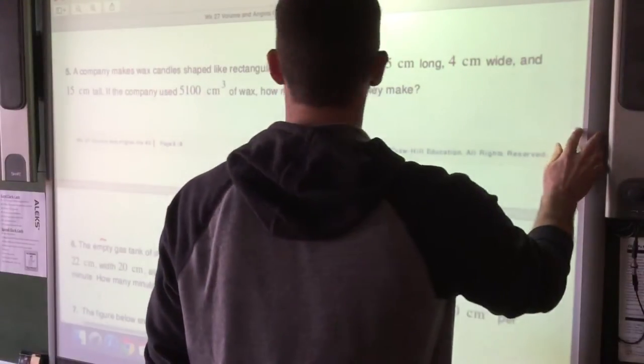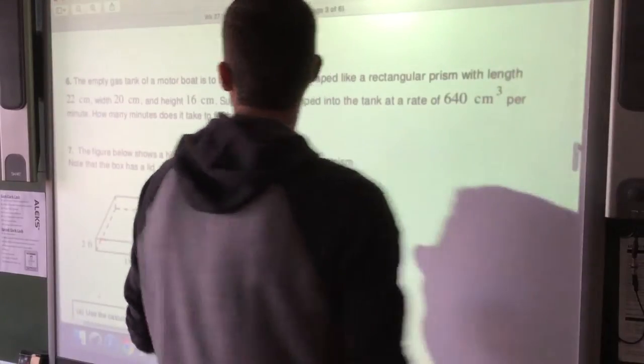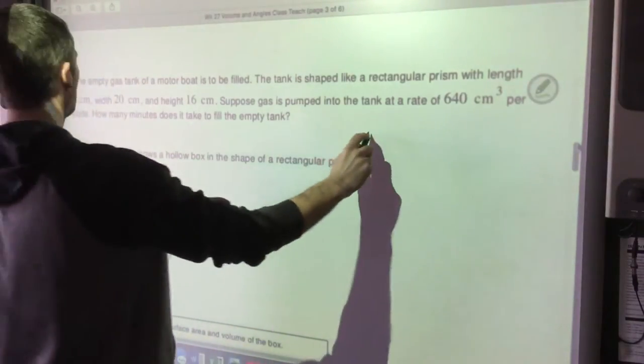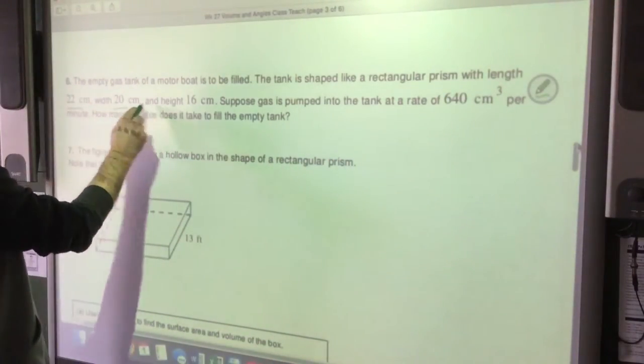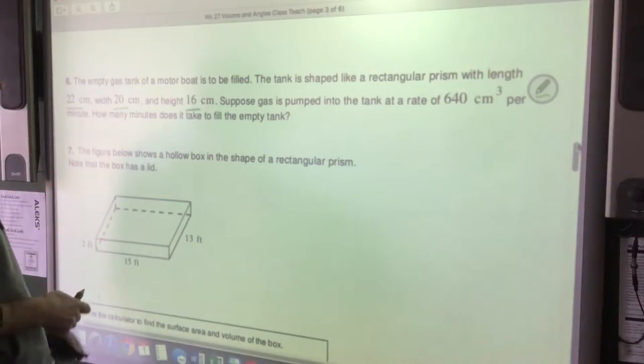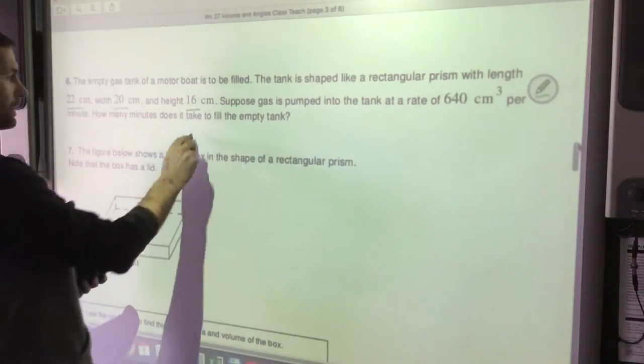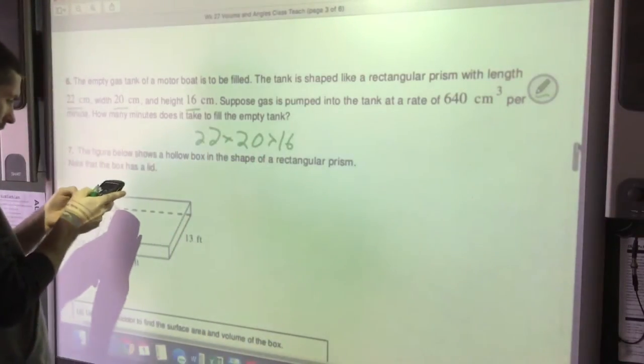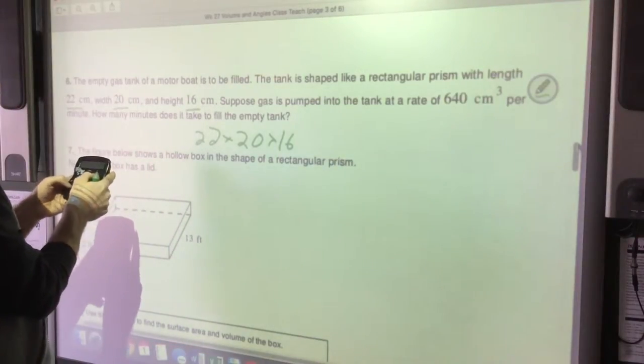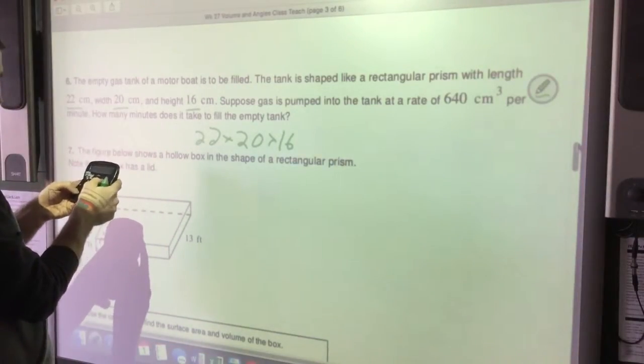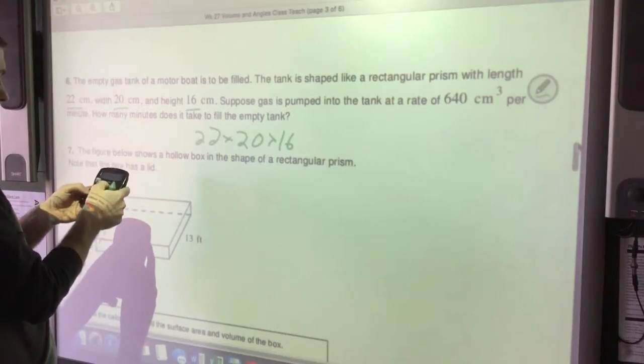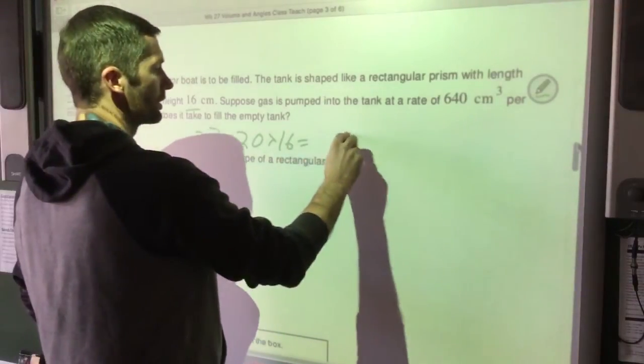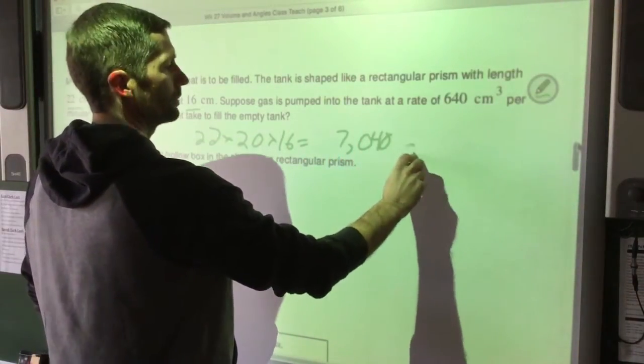Alright, next question. The empty gas tank of a motorboat is to be filled. The tank is shaped like a rectangular prism with a length of 22 centimeters, a width of 20 centimeters, a height of 16 centimeters. Okay, so let's find the volume of that first because we know it's length times width times height. We can multiply those in any order. 22 times 20 times 16 gives you 7,040 centimeters cubed.